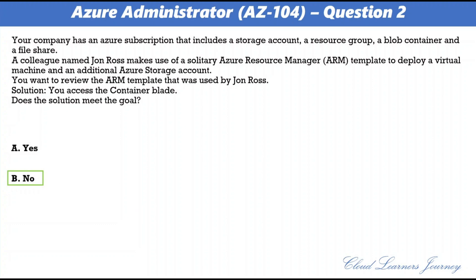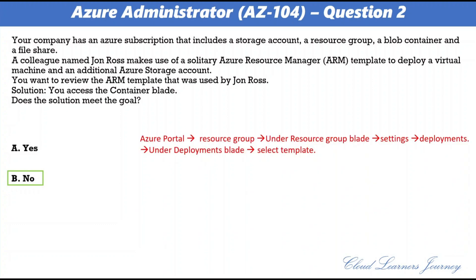You should use the resource group blade. Go to the Azure portal, select the resource group where the virtual machine was created. Under the resource group blade, go to Settings and select Deployments. Under the Deployments blade, select Template. The template used for the deployment is displayed and is available for download.